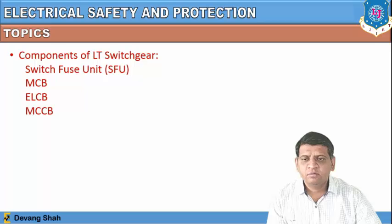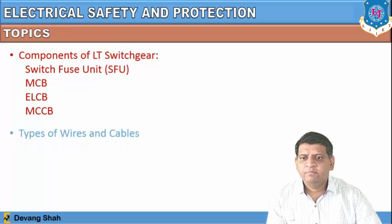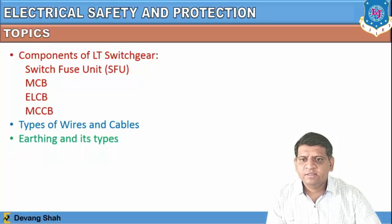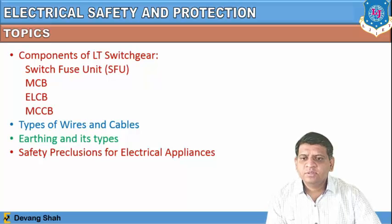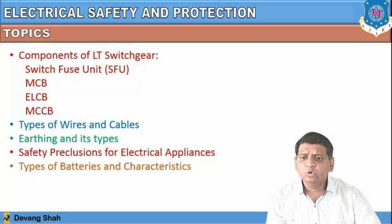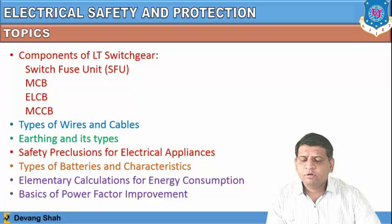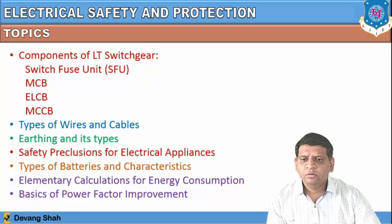Let us discuss the following topics: components of low tension switchgear where we need to discuss switch fuse unit, MCB, ELCB and MCCB. Then we are going to discuss types of wires and cables, earthing and its types, safety precautions for electrical appliances, types of batteries and their characteristics, elementary calculation for energy consumption, and basics of power factor improvement.